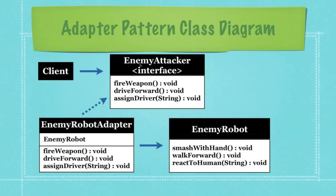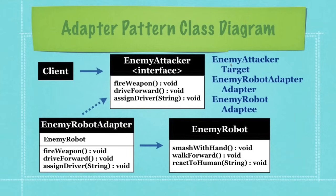Any class can work together as long as the adapter solves the issue that all classes must implement every method defined by a shared interface. Let's look at that as a UML diagram. You have the client, and he wants to use an enemy attacker — I'm looking at this like a video game. Every enemy attacker can fire a weapon, drive forward, and assign a driver. However, you want to create an AI enemy robot. The enemy robot has no need for a driver, it doesn't drive forward — it walks forward — and it has no weapons; it just smashes things. So the enemy attacker is the target, the enemy robot adapter is the adapter, and the enemy robot is the adaptee.